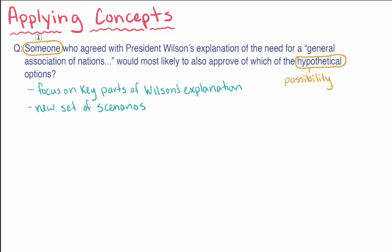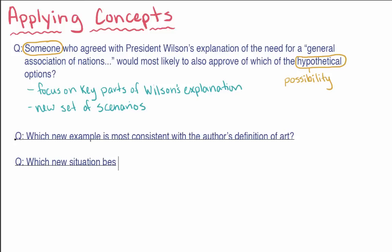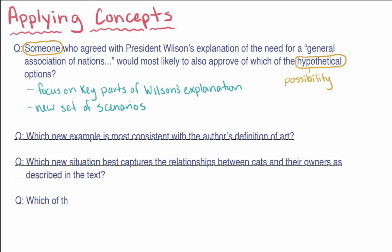Here are some examples of questions of this type. Which new example is most consistent with the author's definition of art? Which new situation best captures the relationship between cats and their owners, as described in the text? Which of these proposed policies would you expect to be the most successful, based on the author's argument?